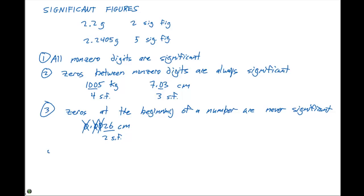The fourth rule is that zeros at the end of a number are significant. So if we had 0.002600 cm, we have four significant figures, as opposed to only the two that we had in the previous example.